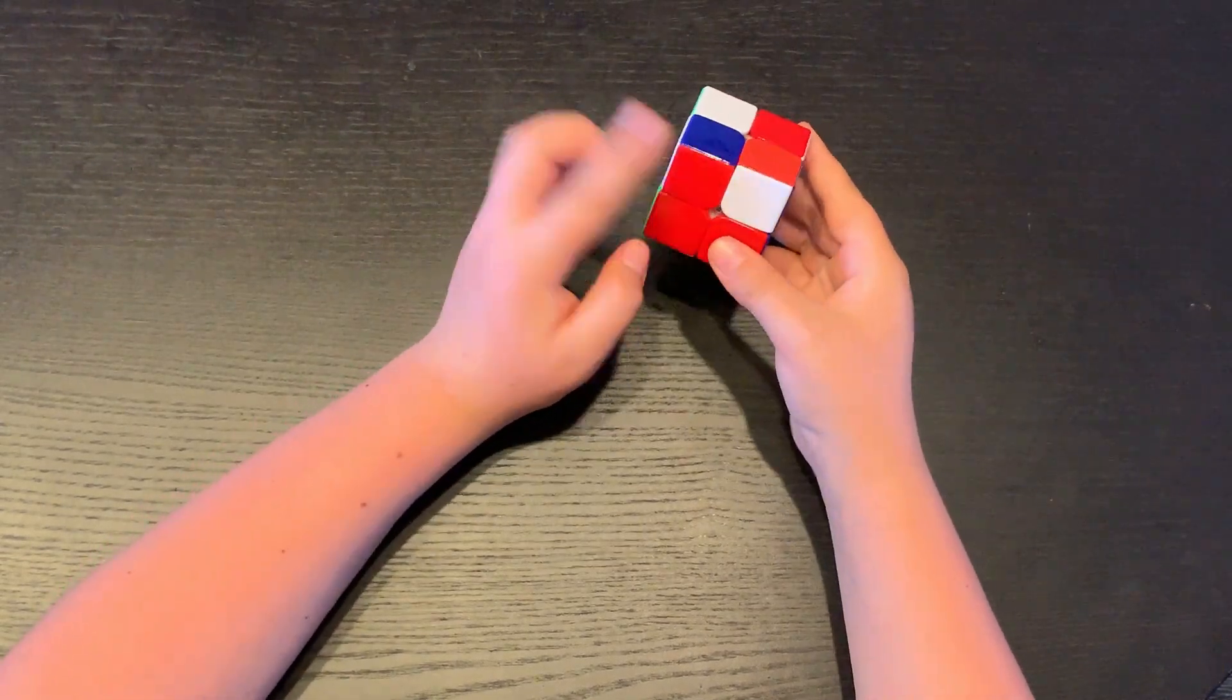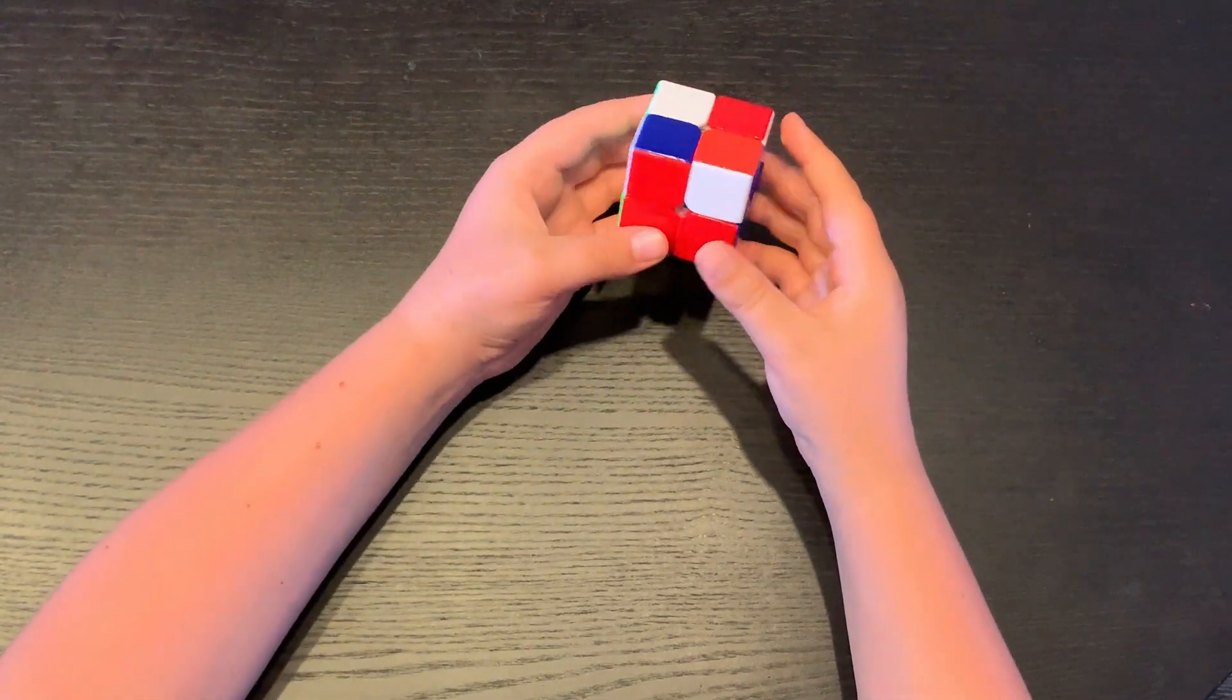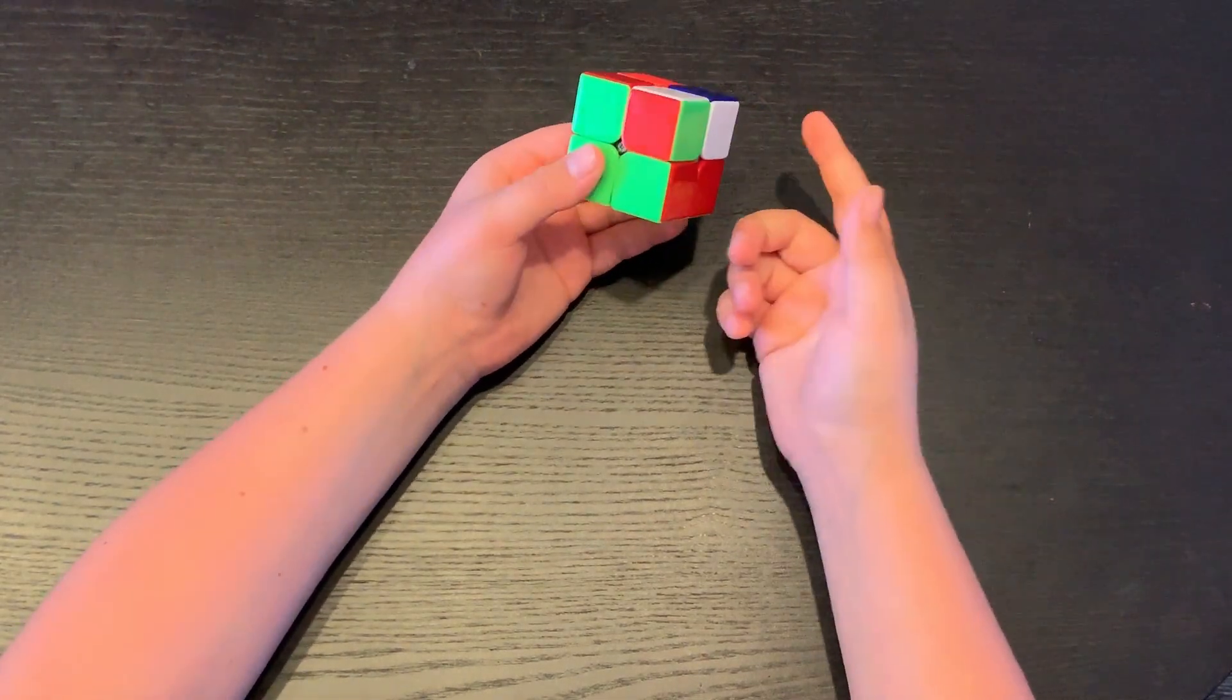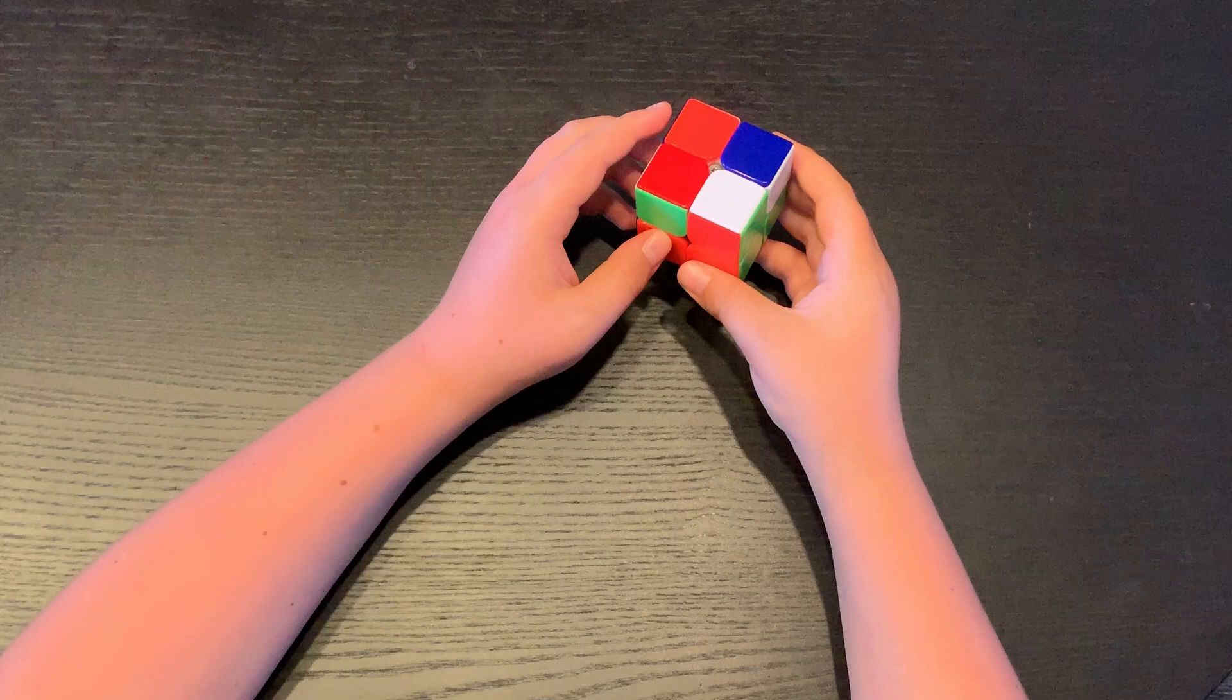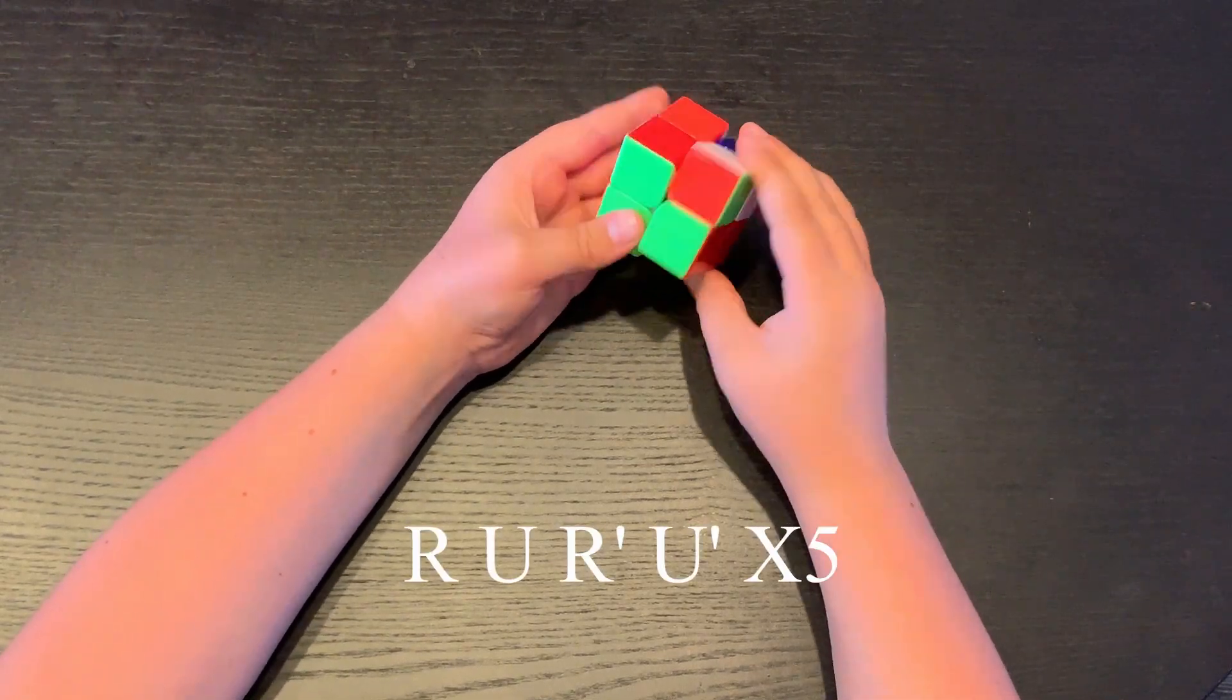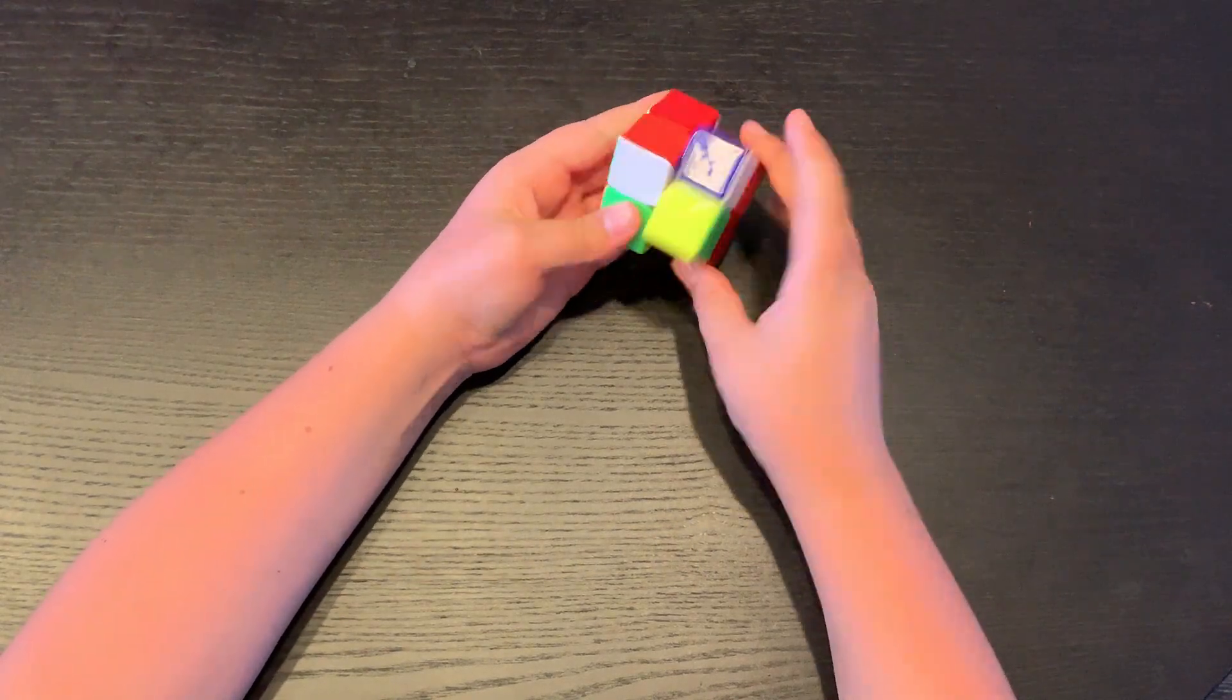So how to do that is you have to bring it up to the color so it matches. So let's say this one's blue, it has to match with blue. This one's red, this one has to match with red. And this one's green and this one has to match with green. So to make an F2L on the right side, you have to perform this algorithm: it's R U R' U'.